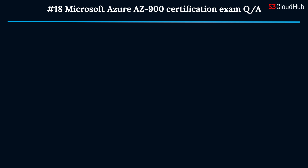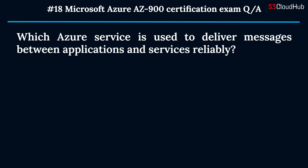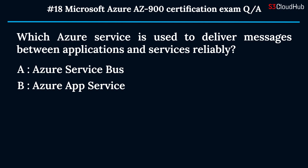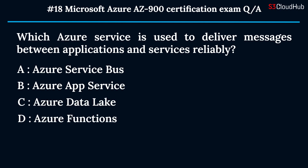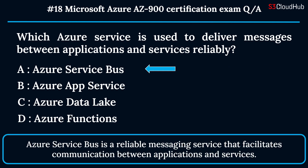The eighteenth question: which Azure service is used to deliver messages between applications and services reliably? Option A: Azure Service Bus. Option B: Azure App Service. Option C: Azure Data Lake. Option D: Azure Functions. The correct answer is option A. Azure Service Bus is a reliable messaging service that facilitates communication between applications and services.